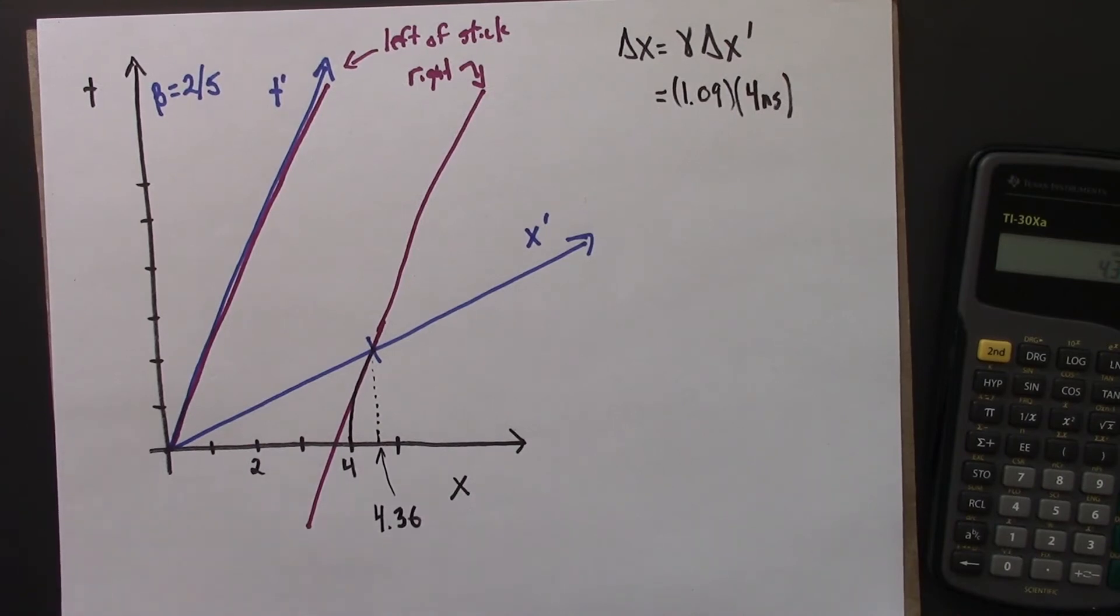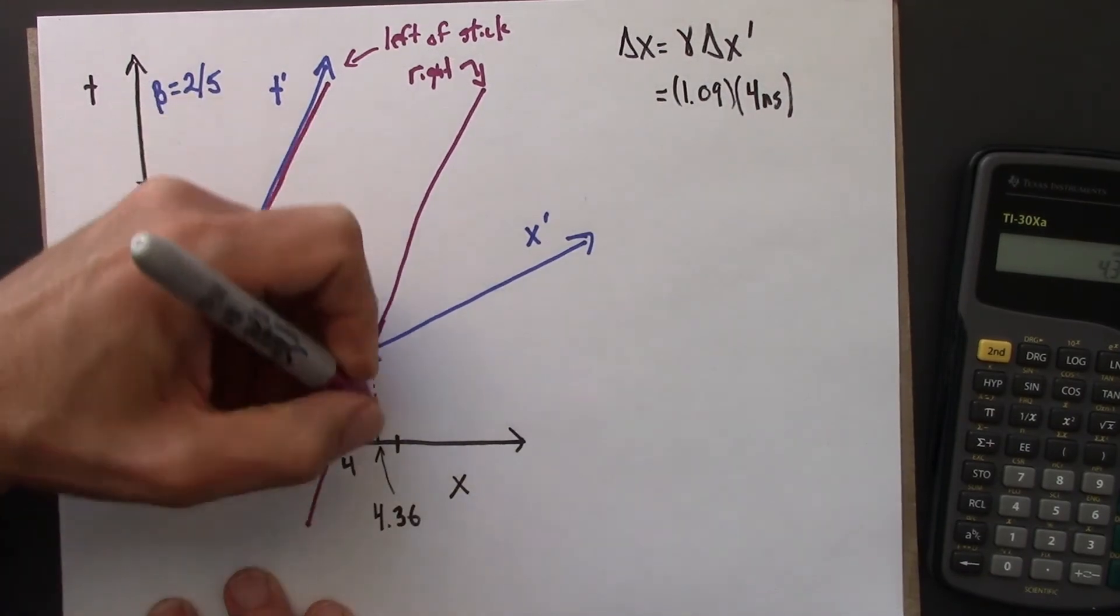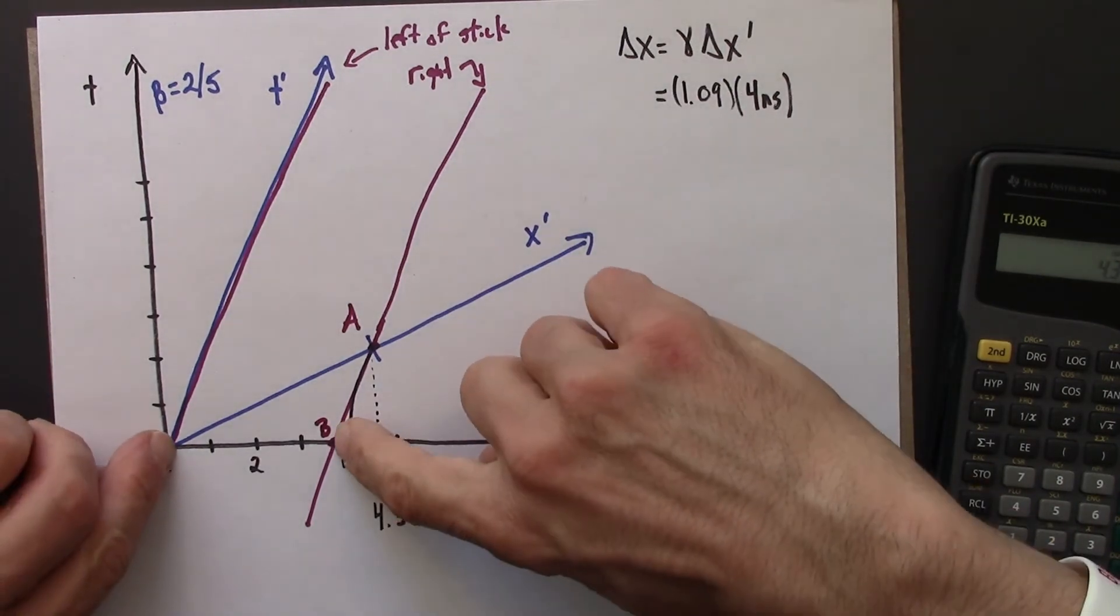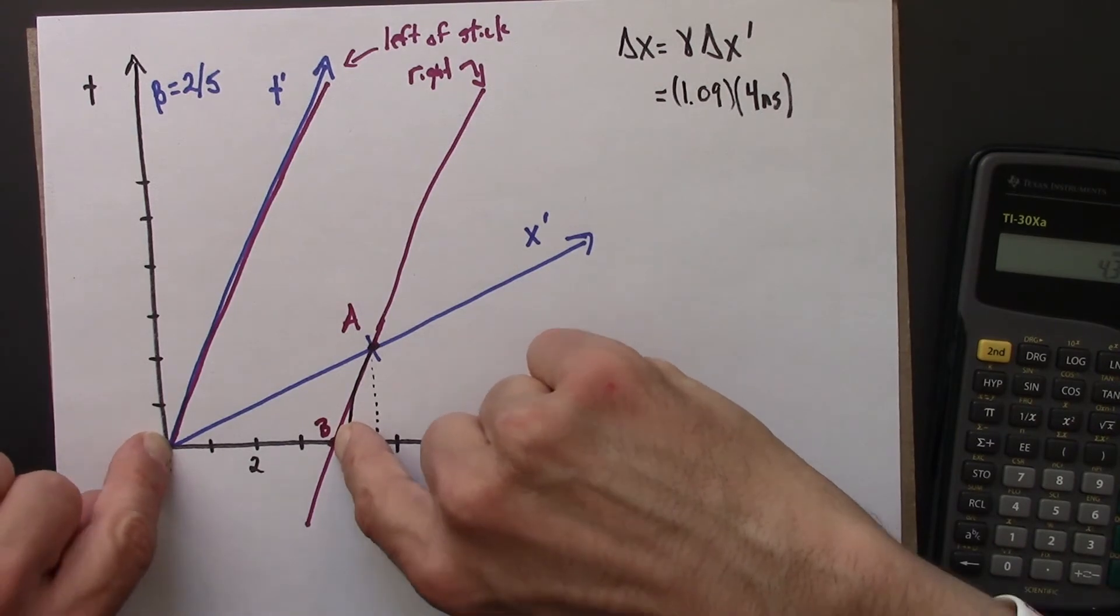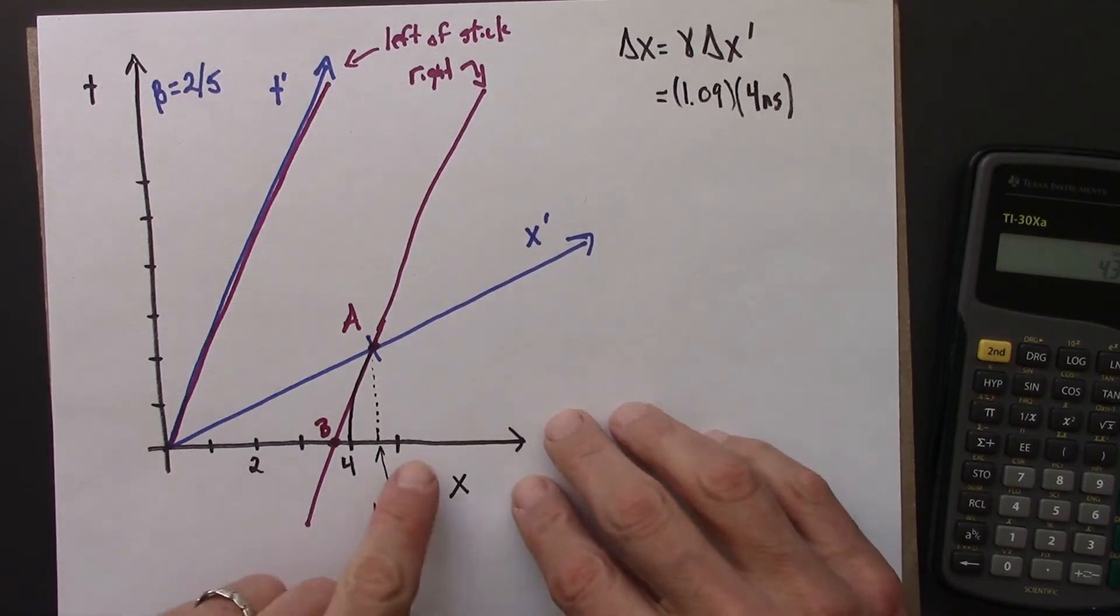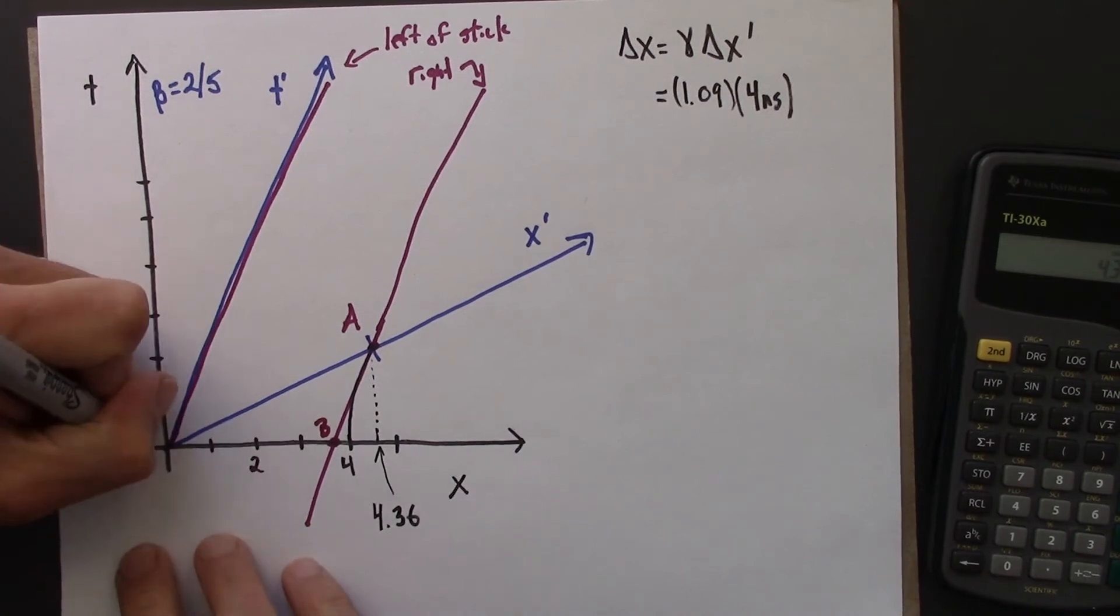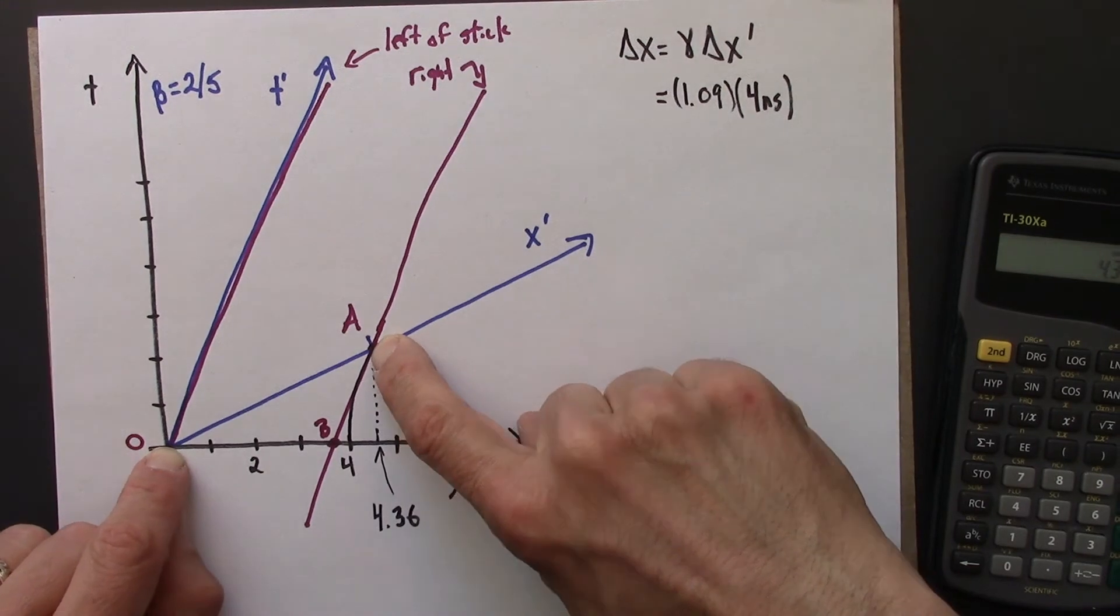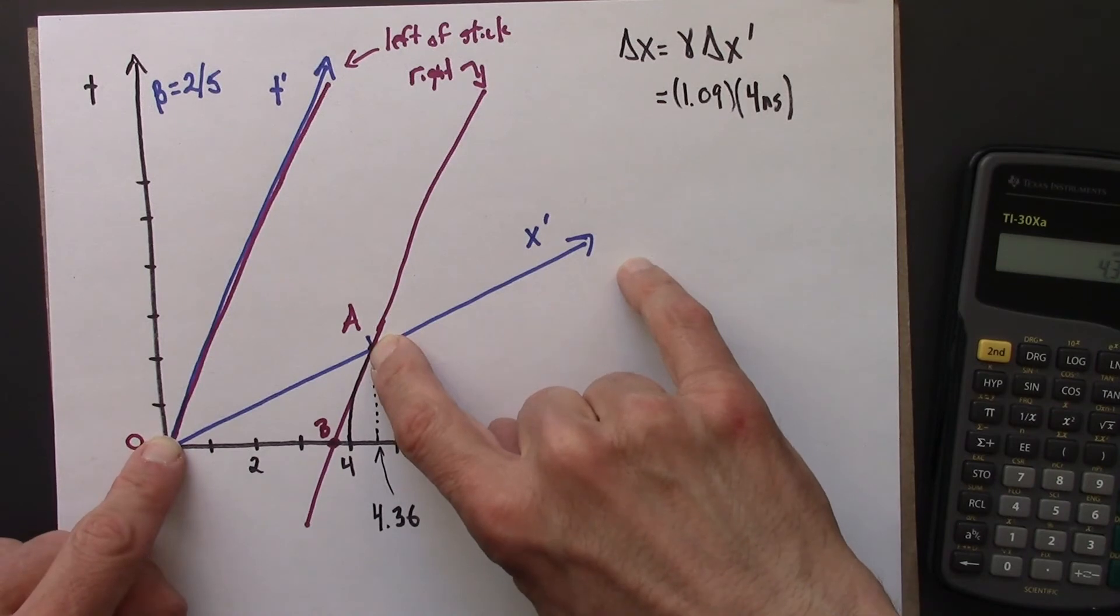But what we want to know is what that value is. I'm going to call this event A, this event B. So this distance between my fingers, that's the length that would be measured in the at rest frame. So remember that length measurements have to occur simultaneously. So these events, let me label, O for origin. Event O and event A, those are simultaneous in Beowulf's frame. They both have a t prime of 0, but they're not simultaneous in Anna's frame. This has definitely a non-zero t.